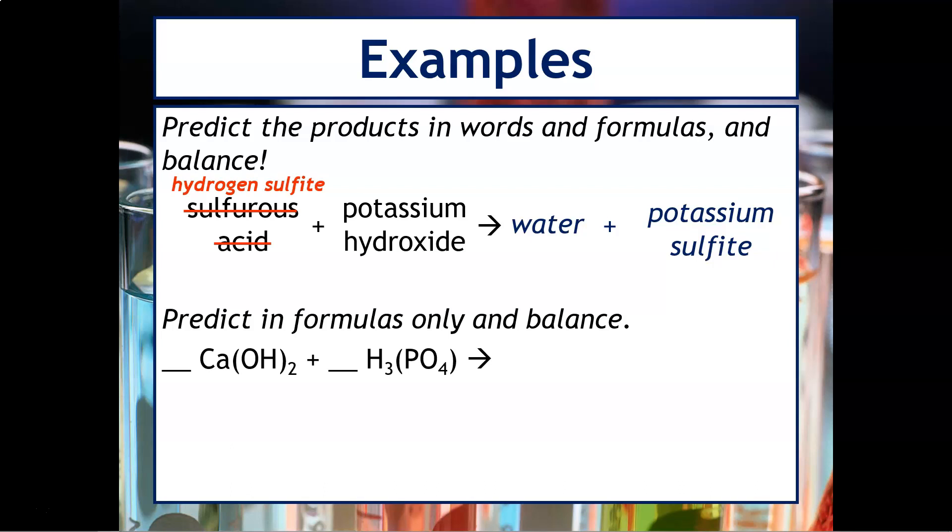So this is in words. Let's try our formulas. So for the one down below, we get water. And then the leftover would be calcium and phosphate. So again, with the calcium and phosphate, you can't just take them and put them together. Make sure that you balance those charges. So you'll have calcium with a plus 2 charge and phosphate with a minus 3 charge. You should get Ca3(PO4)2.